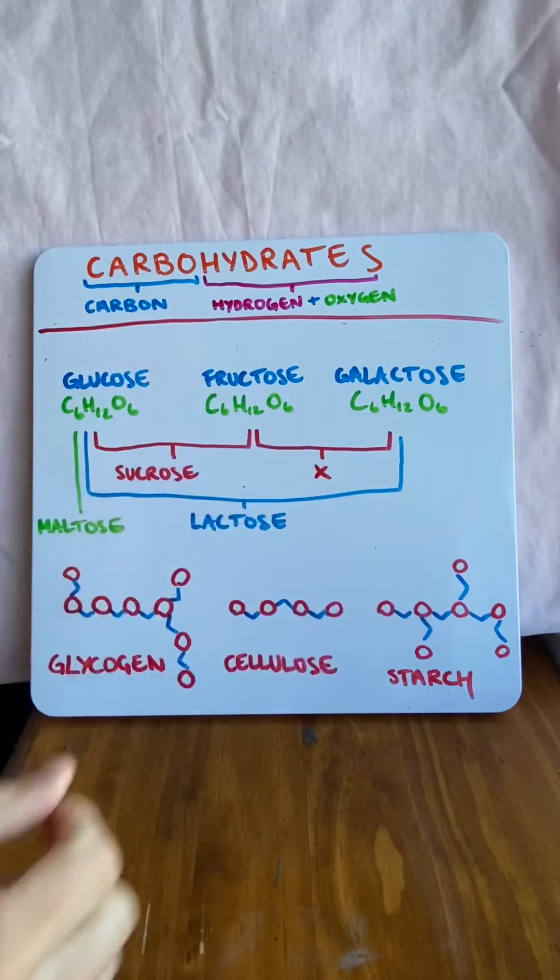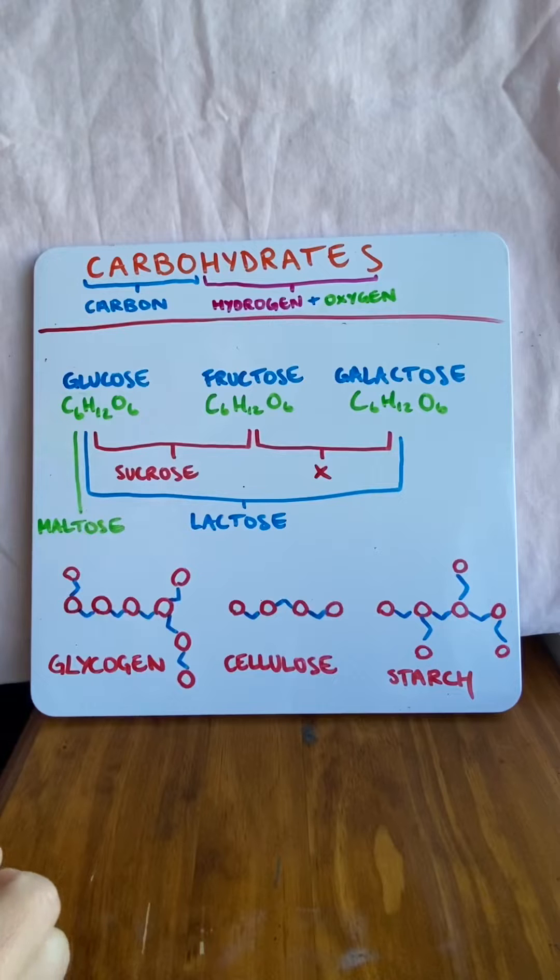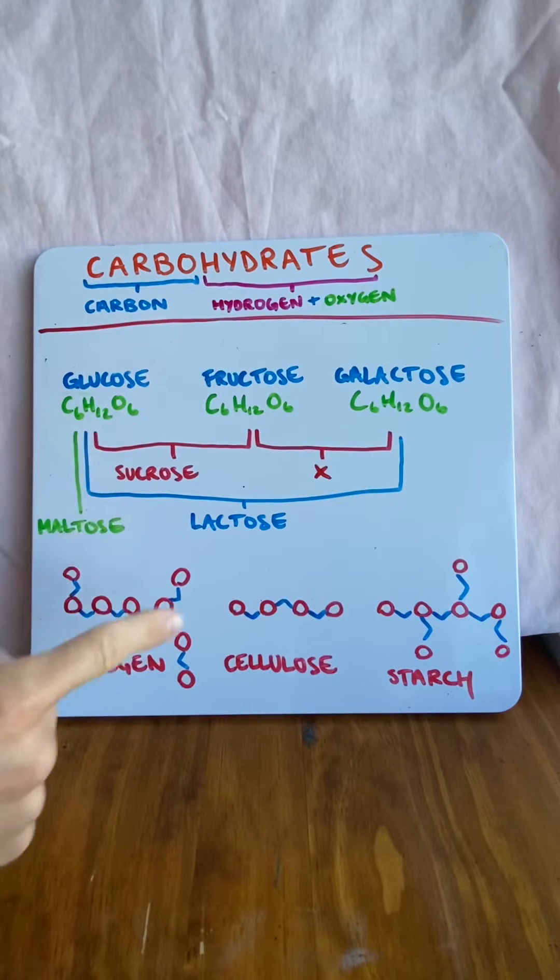Fructose and galactose snapped together don't actually form anything in nature. So they're the disaccharides: maltose, sucrose and lactose.